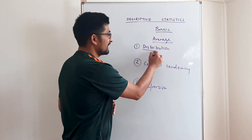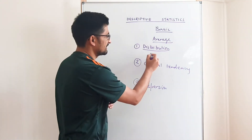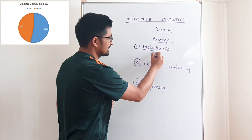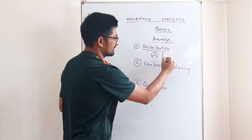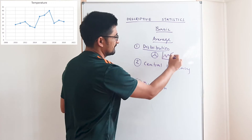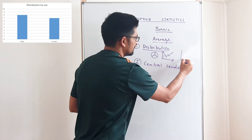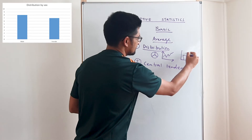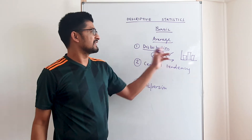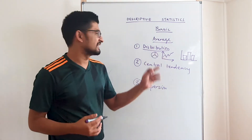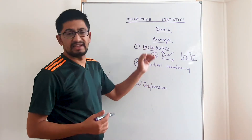So when you look at distribution, how can you see the distribution of data? You can see distribution of data using a pie chart, a line graph with an x-axis and y-axis, or even a bar graph. Using those techniques you can see the distribution, and you can easily generate pie charts, line graphs, or bar graphs in Excel.